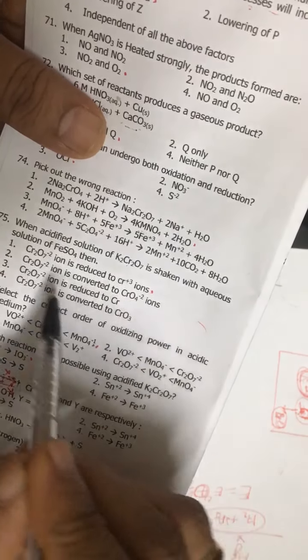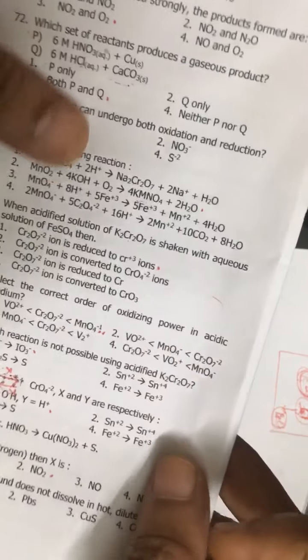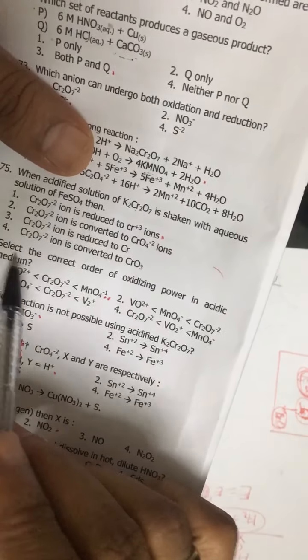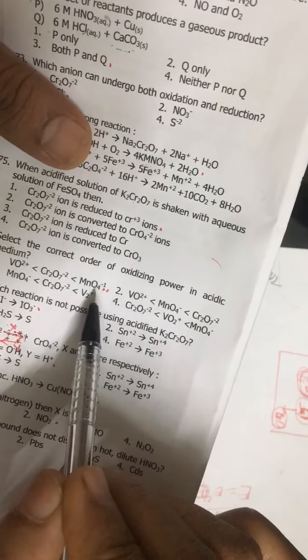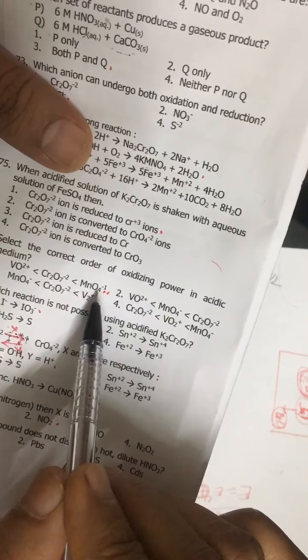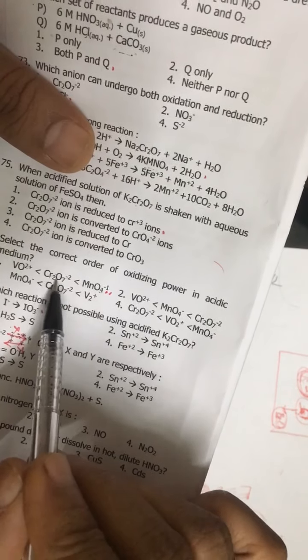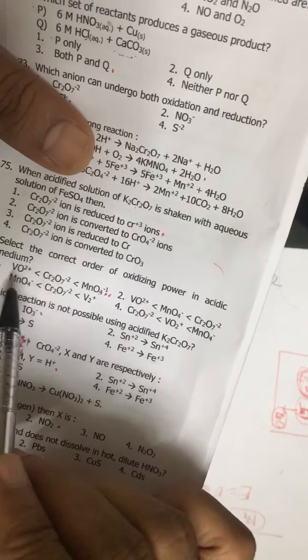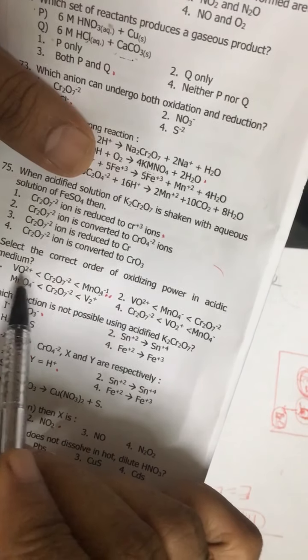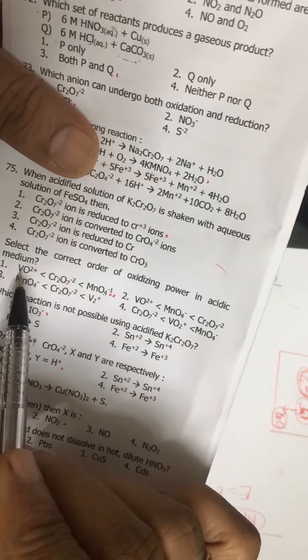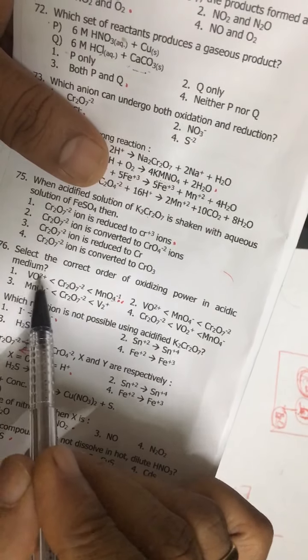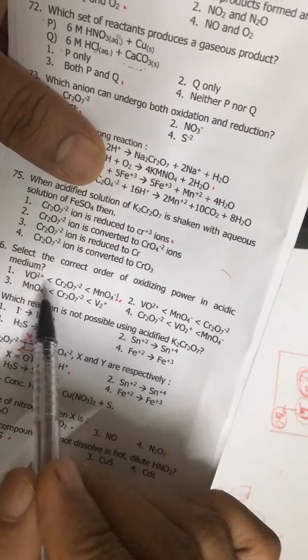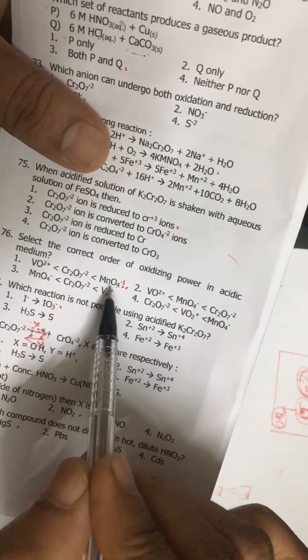For this, you must remember it is always reduced to Cr3+, and what happens to Fe2+ is it is oxidized to Fe3+. Select the order of oxidizing power of these: MNO4, KMnO4 is the strongest oxidizing agent, even stronger than K2Cr2O7. So you must remember, and then this here - the oxidation state is plus 4, so the highest is plus 5. The highest oxidation state is plus 5.